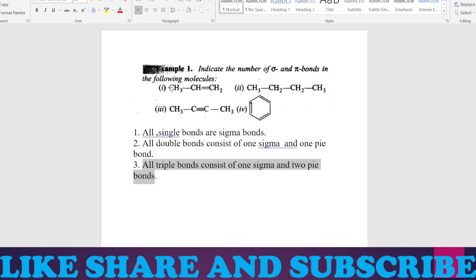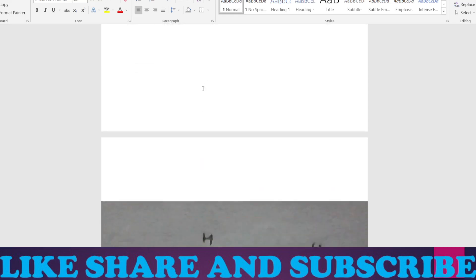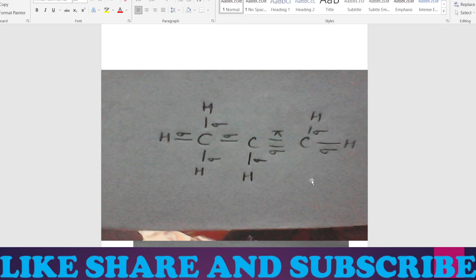In the first example, this CH3-CS double bonds. If you expand the structure of these, it will look something like this. The carbon is attached with three hydrogens, then the second carbon attached with one hydrogen and the third carbon attached with two hydrogens. From here you can see that we have one, two, three, four, five, six, seven.